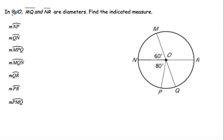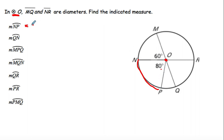This is how we represent circle O. MQ and NR are diameters. One way you can tell something is a diameter, even if it doesn't say it, is if it goes all the way across the circle and it goes through the center. The problem asks what arc NP is. NP is a central angle, so arc NP is equal to 80 degrees.